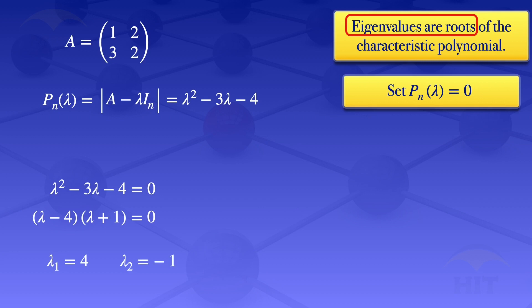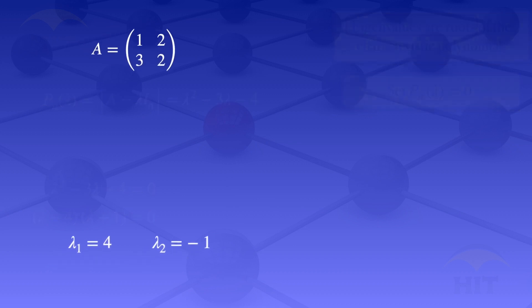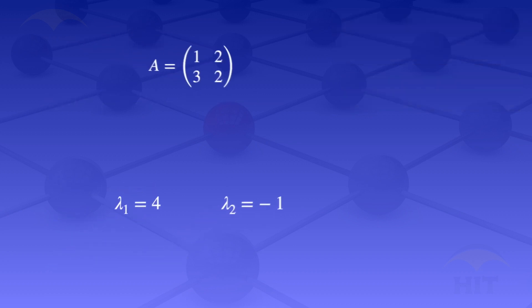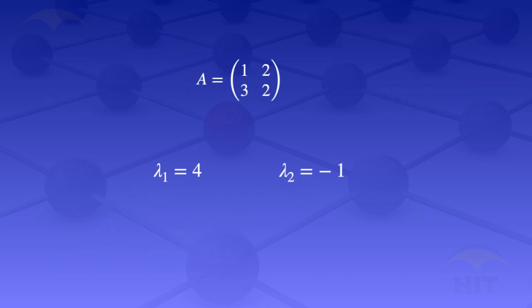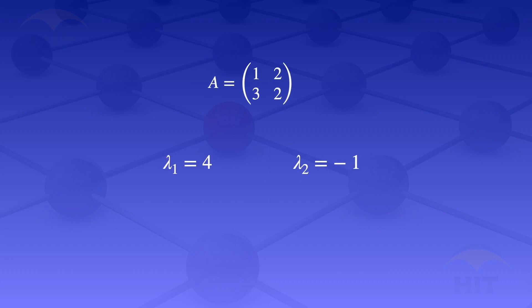So the eigenvalues of the matrix A with elements 1, 2, 3, 2 are lambda₁ equals 4 and lambda₂ equals minus 1.